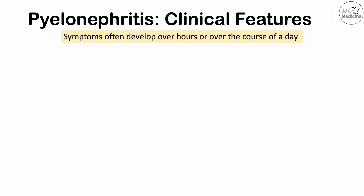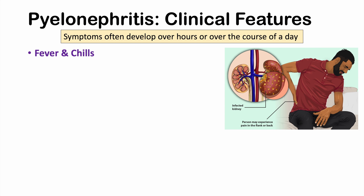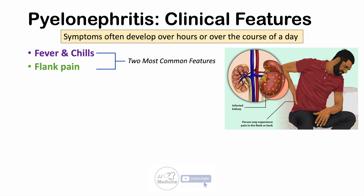Now, what are the clinical features of pyelonephritis? Symptoms often develop rather quickly — over hours or the course of a day. We find fever and chills, which makes sense as this is a severe infection of the kidney. We can also see flank pain, as the kidneys are located in the back at the lower edge of where the rib cage ends. These are the two most common features of acute pyelonephritis.